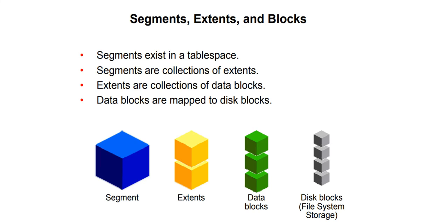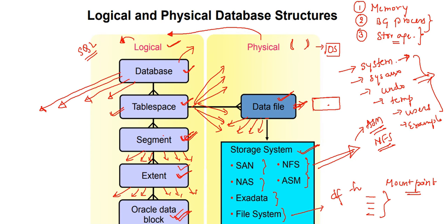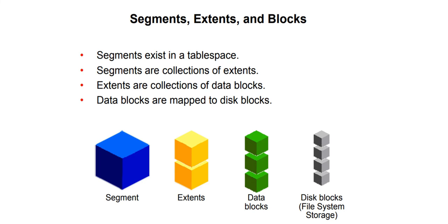Segments exist in a tablespace; segments are collections of extents; extents are collections of data blocks; and data blocks are mapped to disk blocks in the file system storage. One segment can contain multiple extents, one extent can contain multiple data blocks, and one data block can contain multiple disk blocks. Oracle defines these structures in scripts that run automatically when you create data files or tablespaces.